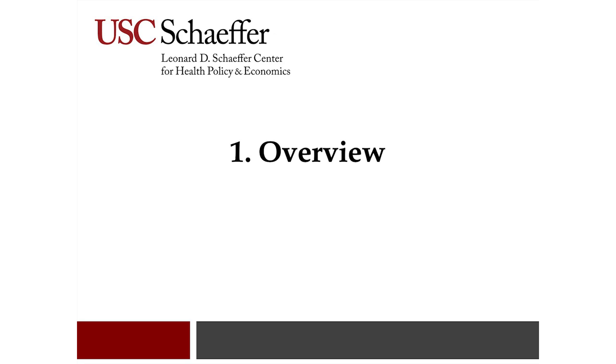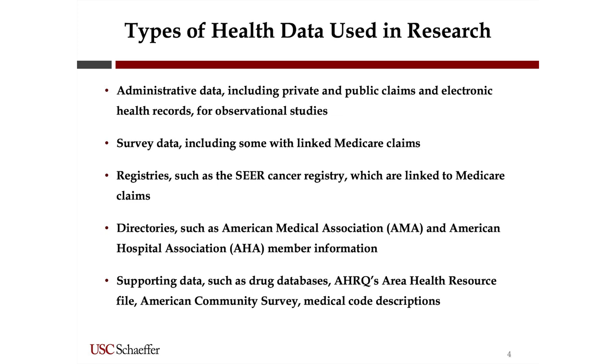Starting with the types of data we use in research: administrative data is one type, and that includes private and public claims and electronic health records for observational studies. These data obviously weren't collected for research, but we do secondary analysis on them.